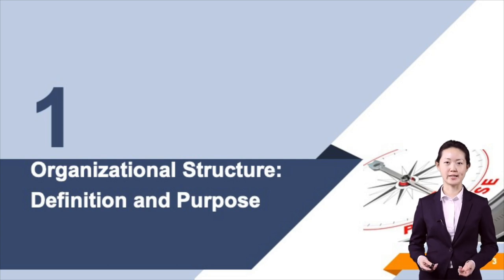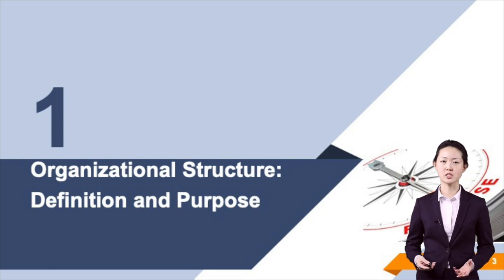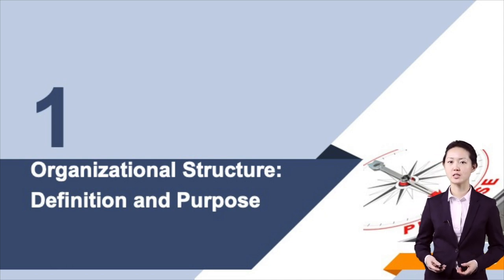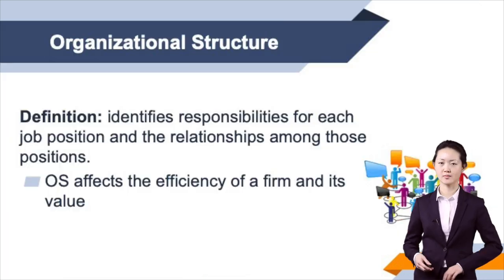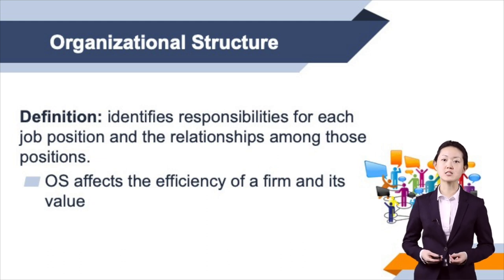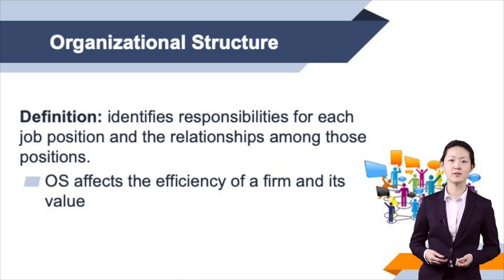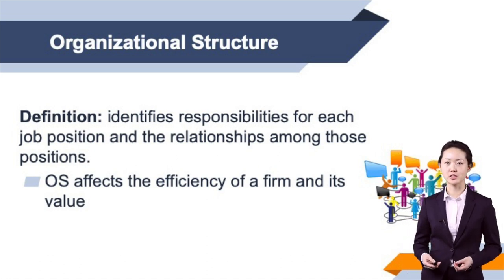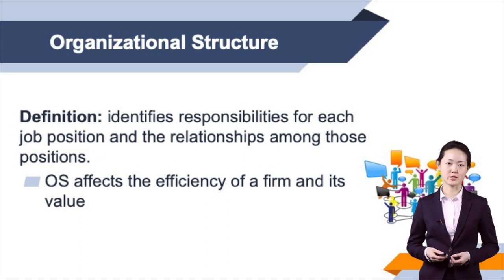Each firm should have a strategic plan which determines the future direction of the business. To achieve the strategic plan, responsibilities of managers should be organized in a way to indicate how all the job responsibilities fit together. The organizational structure affects the efficiency with which the firm produces a product or service and therefore affects the value of the firm. By definition, the organizational structure identifies the responsibilities for each job position and also the relationships among those job positions.